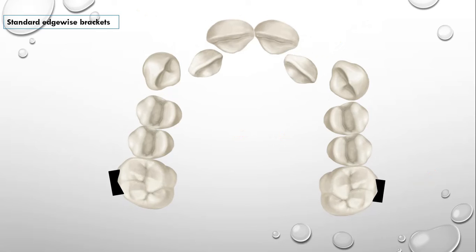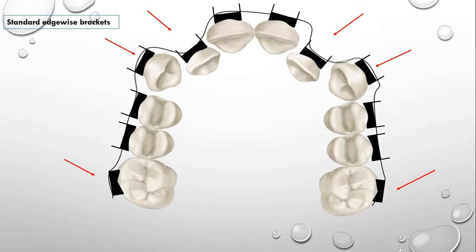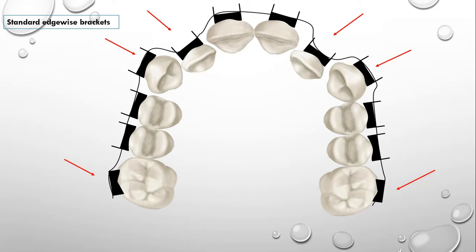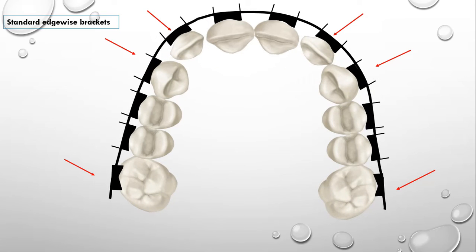A patient comes to you with this kind of crowding or malalignment. Now you have given standard edgewise brackets and you have given first wire for the alignment of dentition, which is very springy in nature. When you will fix this wire into the bracket slots, it will start movements of these teeth. And when you will reach to the heaviest rectangular wire, you should get ideal alignment.